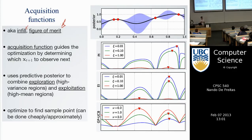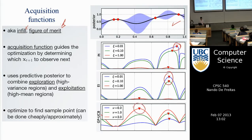It trades off exploration and exploitation and is easy to optimize compared to the original problem. Given a GP with four data points, I'm showing three different acquisition functions that people use a lot in the literature. They do tend to pick the same points, but some are more aggressive toward where the mean is high, some prefer both high mean and large variance, and some like points of very high variance.